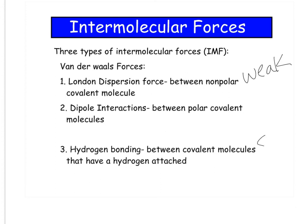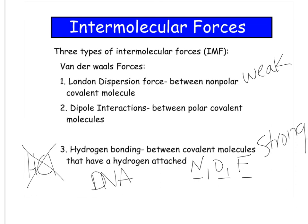And then hydrogen bonding, which is the strongest, is between covalent molecules that have a hydrogen attached, and it also must have an N, an O, or an F. If there's a hydrogen attached to, say, chlorine, that doesn't hydrogen bond. It has to be with an N, an O, or an F. And hydrogen bonding is the strongest because DNA hydrogen bonds—you'd hope it would be really strong, otherwise your DNA would fall apart.